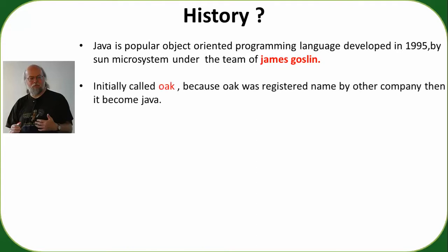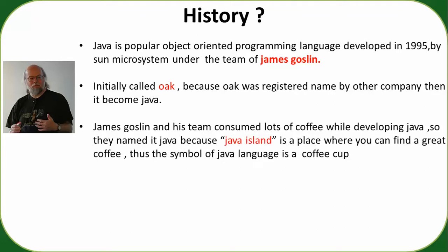It is a powerful object-oriented programming language, but its name was not Java initially — its name was Oak. But Oak was already registered by another company, so it was renamed Java.